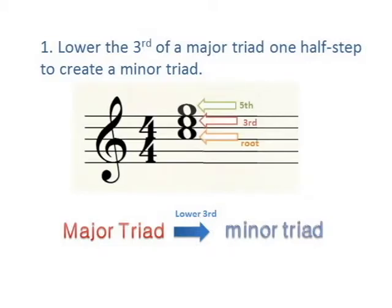C, E, G is a major triad. By lowering the third, we find that C, E flat, G is a minor triad.